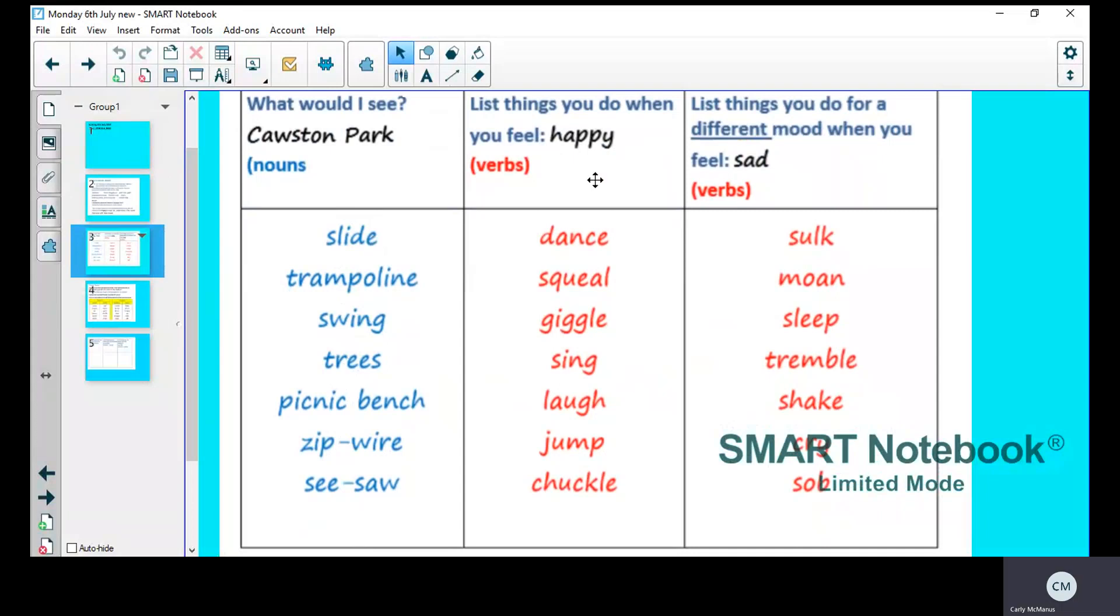And then I thought about verbs, doing words. Now remember I talked about personification where objects can do human things, human verbs. So none of these objects here can dance but by them moving, so maybe by the swing moving, I can compare it to them dancing.